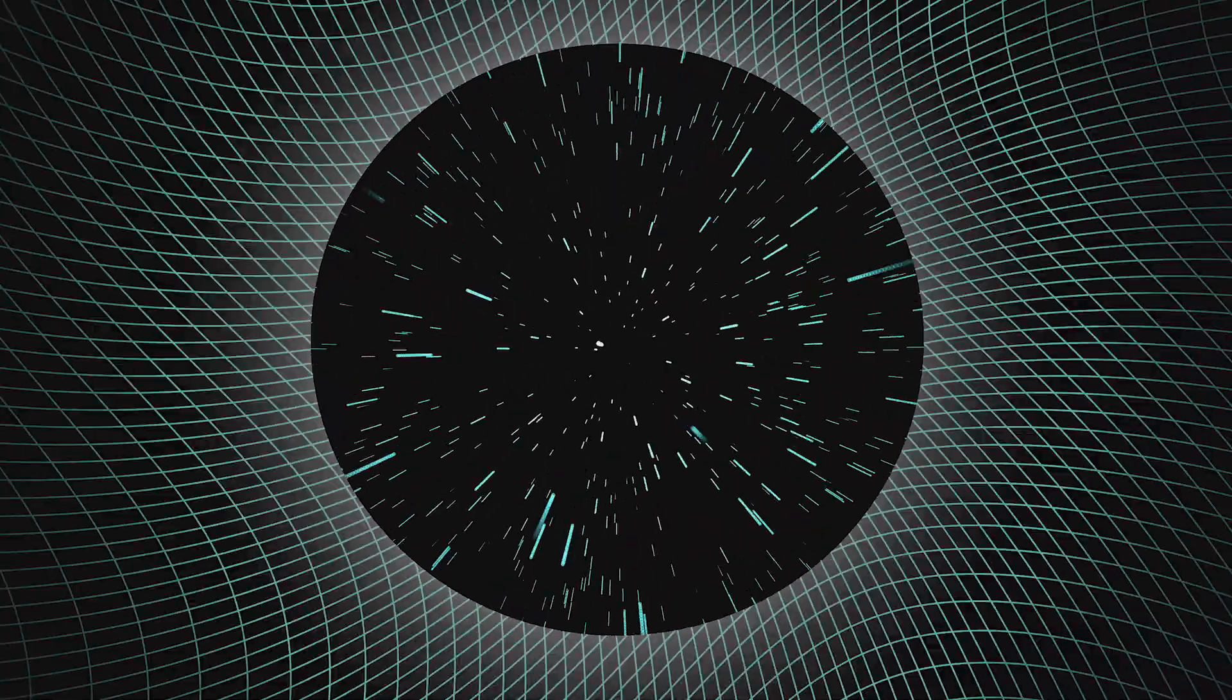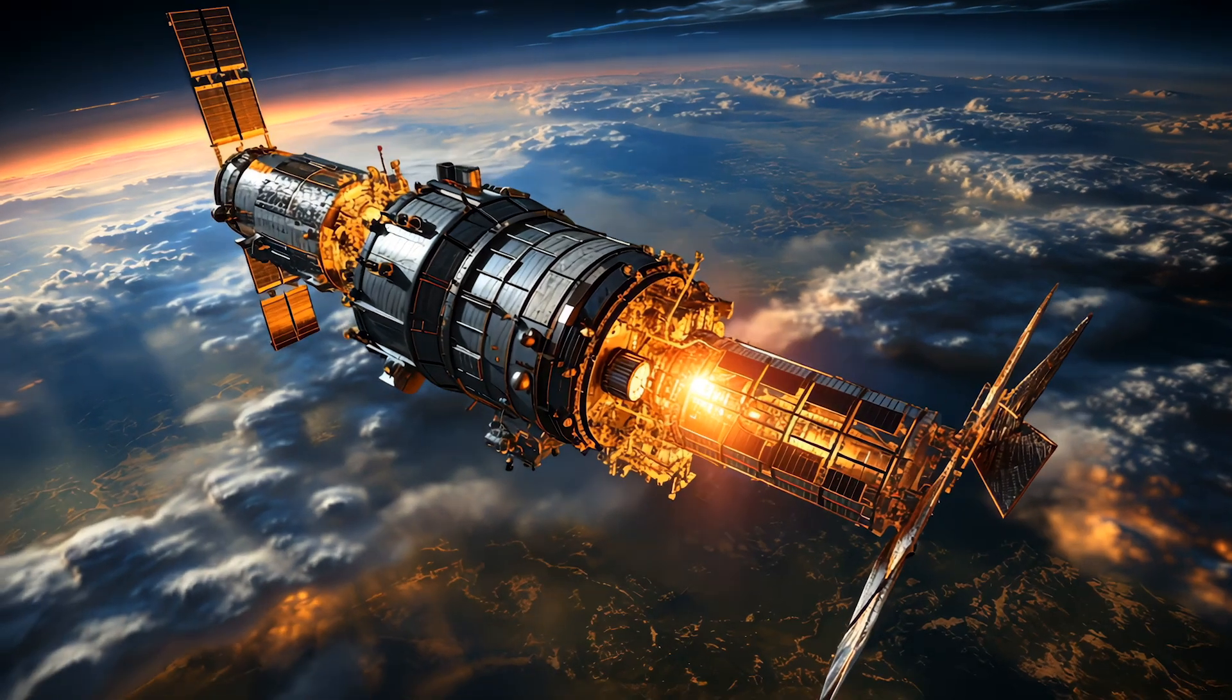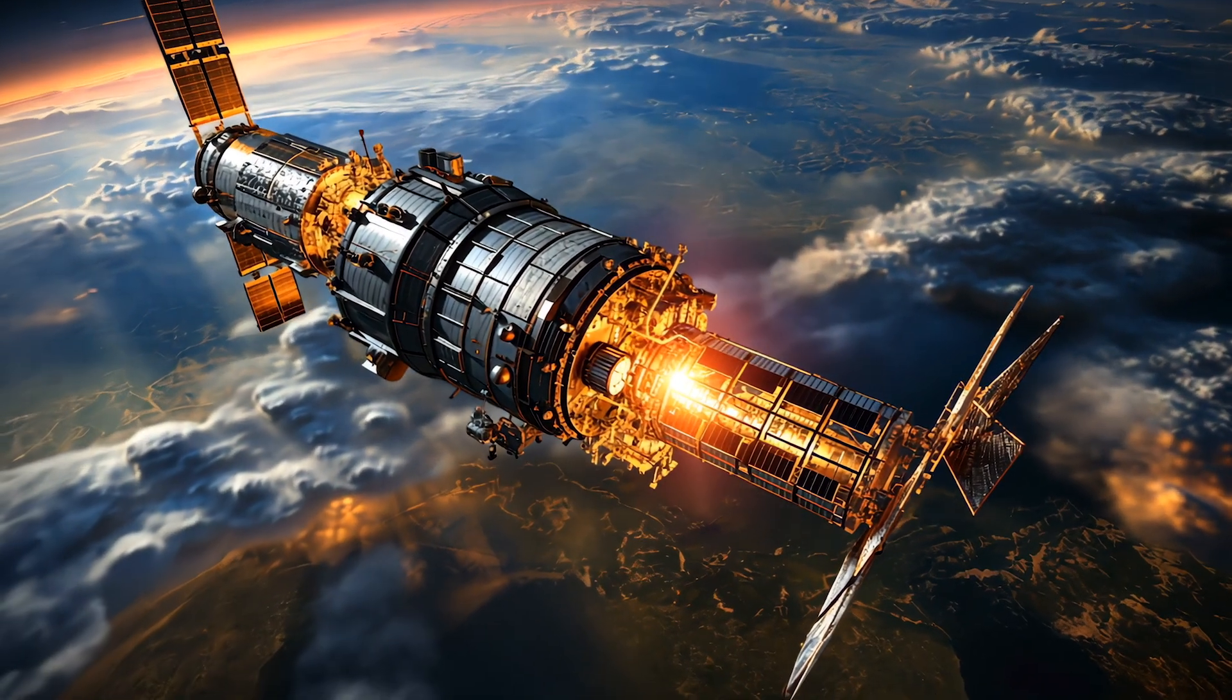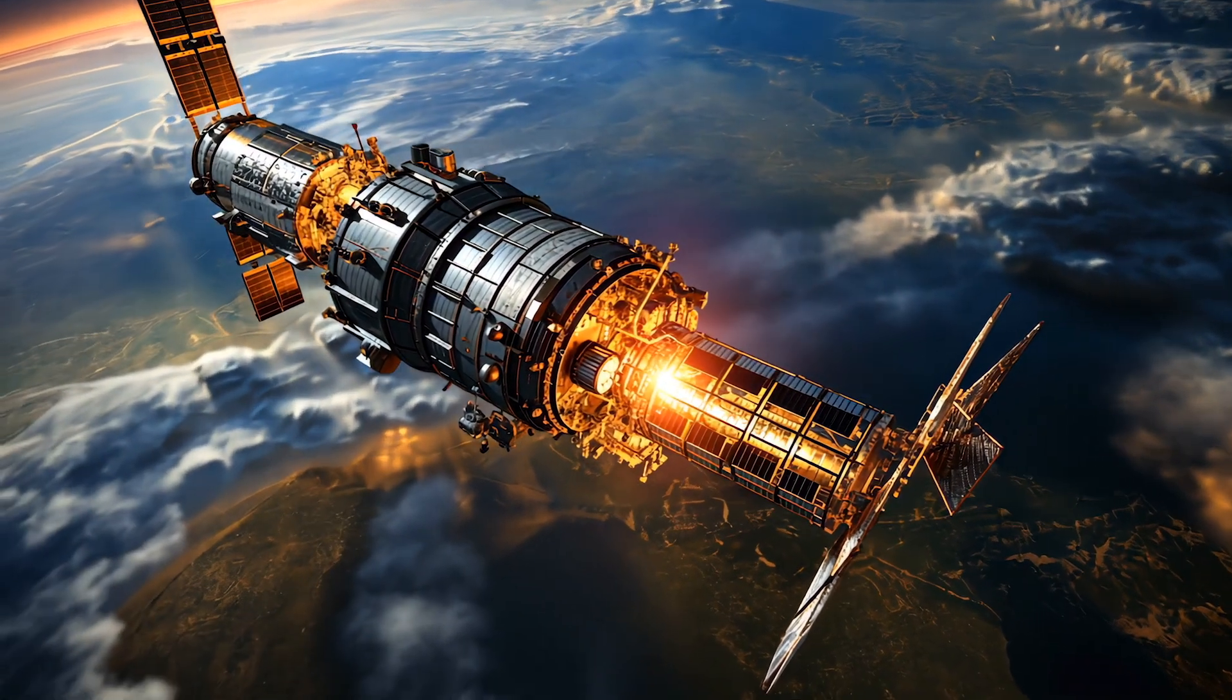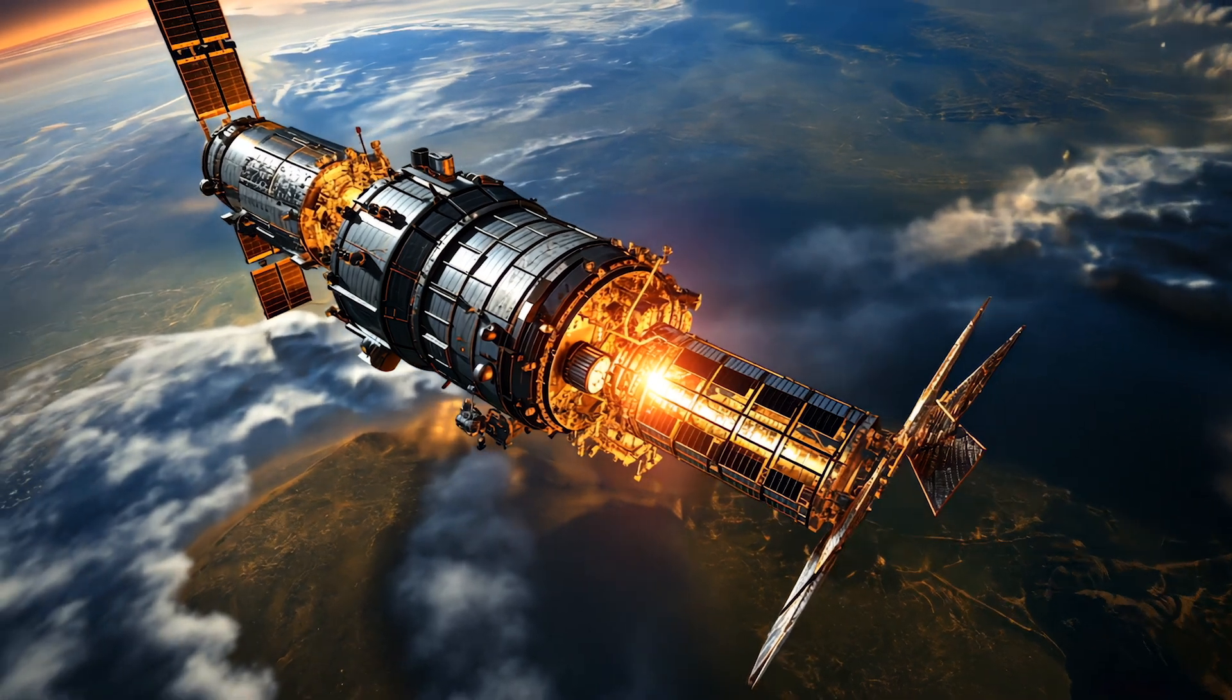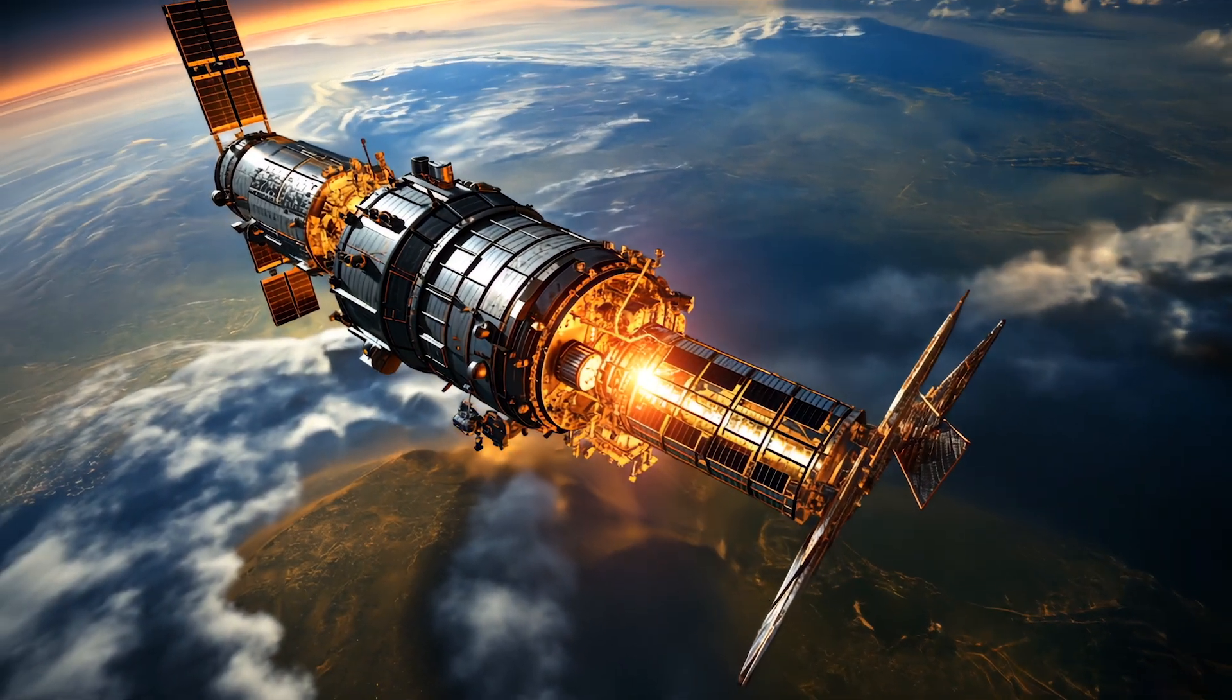To escape Earth's gravity, for example, an object needs to reach about 11.2 kilometers per second. That's over 40,000 kilometers per hour. Even at that speed, though, it remains bound to the Sun, orbiting with Earth. To break free from the entire solar system? That's a whole other challenge.